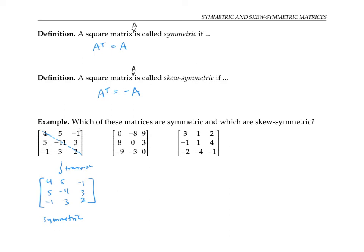That makes sense, because taking the transpose is like flipping rows to columns. Let's see what happens when we take the transpose of the next matrix. The resulting matrix is exactly the negative of the original matrix, so this matrix is skew symmetric.